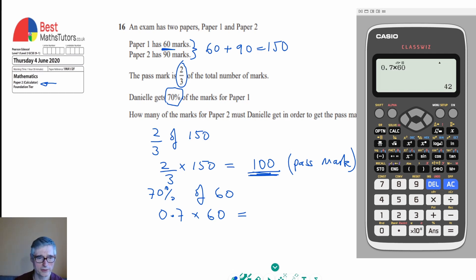So we get 0.7 times 60 is 42. So that's what marks she's scored already. So then to work out what marks does she need to get the pass? Well, she actually needs to get the difference between 100 and 42. So she needs 100 minus 42. And if I work that out, I could use a calculator.